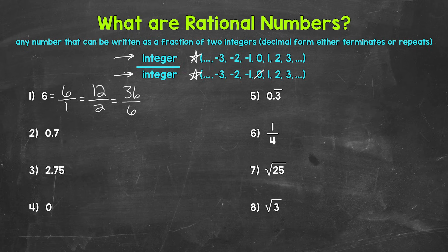What about negative six — a negative number? Can we write this as a fraction of two integers? Yes. Negative six over one equals negative six, or negative 18 over three equals negative six. So negative six is a rational number as well.